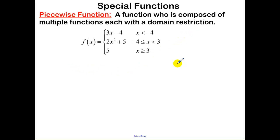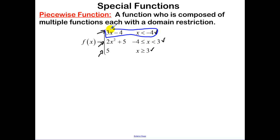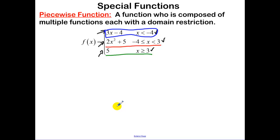A piecewise function is a function composed of multiple functions. We have basically three equations that make up one function, but they have domain restrictions. We're going to graph the top function for x values less than negative 4, the middle function for x values between negative 4 and 3, and the bottom function for x values greater than 3.